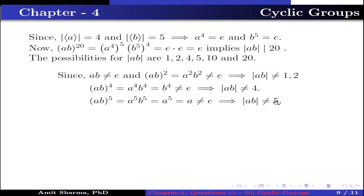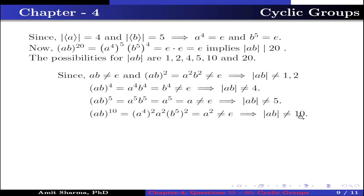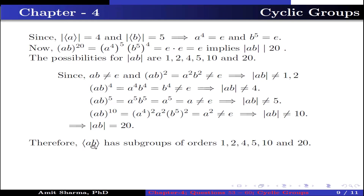This implies the order of AB cannot be 5. (AB)¹⁰ = (A⁴)²·A²·(B⁵)² = A² ≠ identity, so the order of AB cannot be 10. Therefore, the order of AB is 20. Thus the group generated by AB has subgroups of order 1, 2, 4, 5, 10, and 20.